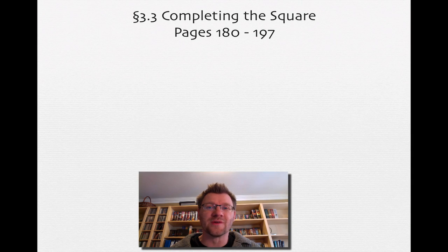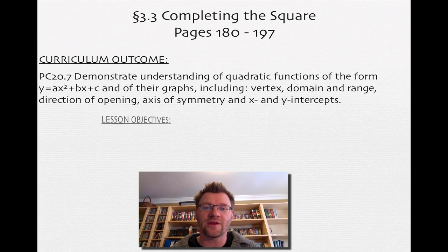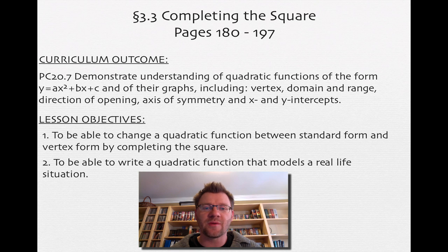Today's topic is 3.3, completing the square, on pages 180 to 197 in your text. Our curriculum outcome is to demonstrate understanding of quadratic functions of the form y equals ax squared plus bx plus c, and their graphs, including vertex, domain and range, direction of opening, axis of symmetry, and x and y intercepts. Our lesson objectives are: one, to change a quadratic function between standard form and vertex form by completing the square, and two, to write a quadratic function that models a real-life situation.